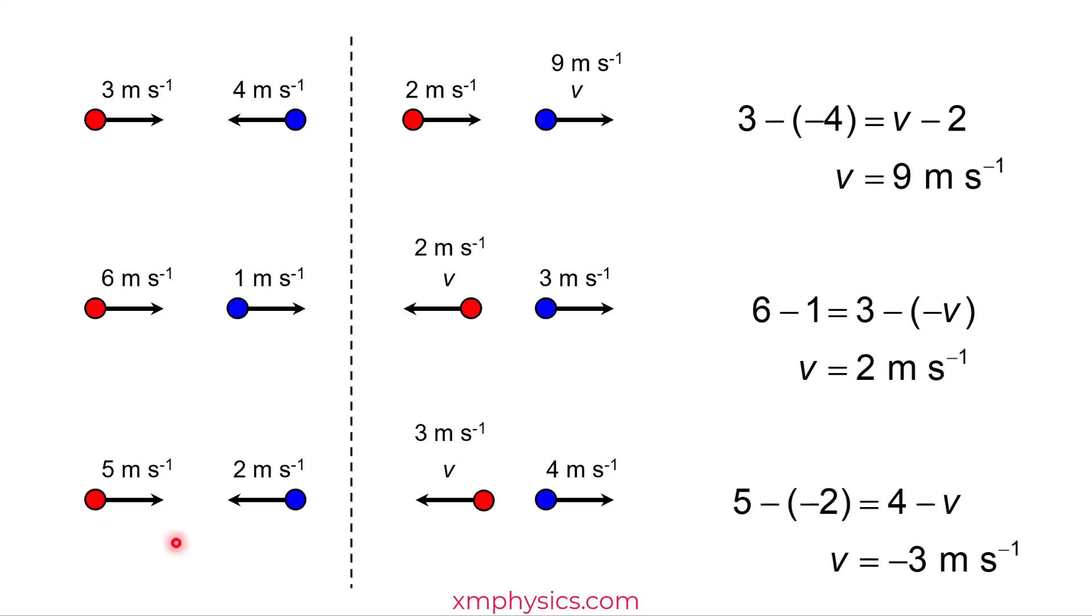So again, see? What is the relative speed that they're approaching each other? 7, right? And what is the relative speed that they're separating from each other? Also 7. I hope you understand the RSOA equals RSOS formula better now. Ta-ta!